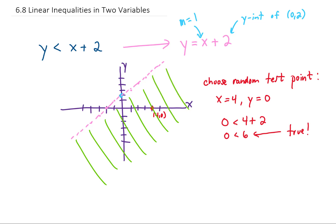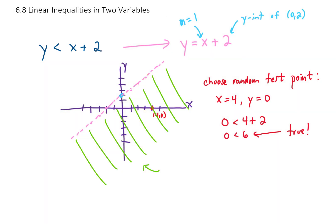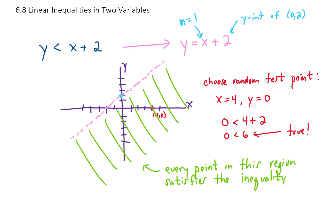What that means is if we choose any point in the solution set below this line and take the x and y value and plug it into the original inequality, it will give us a true statement. Every point in this region will satisfy this inequality. On the other hand, any point up in the region above this line will not satisfy the inequality.